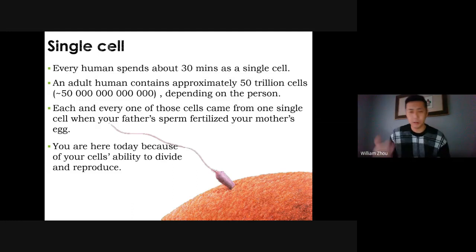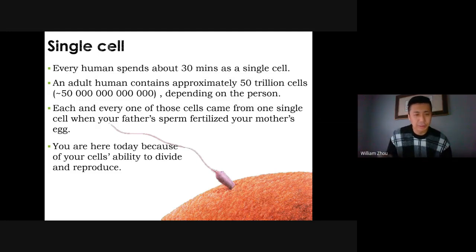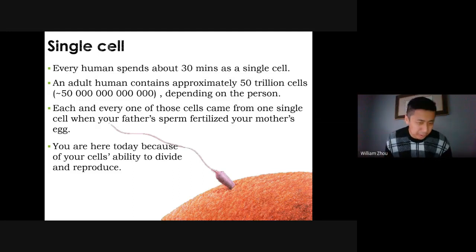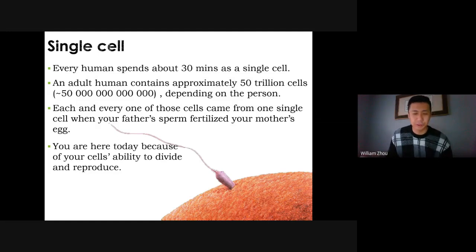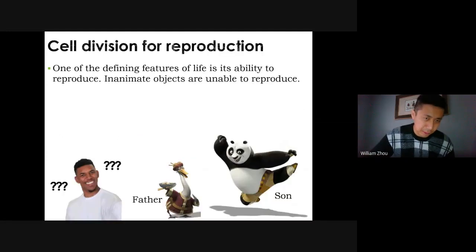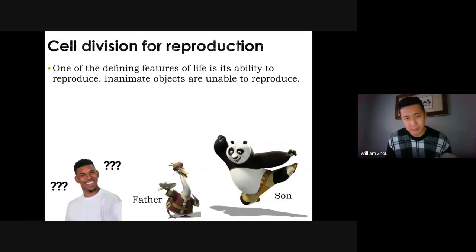We spent approximately 30 minutes as a single cell, and then it divided to make two cells, then four, then eight, and so on until we are who we are today. The first cell in your body was a fusion of a sperm and an egg from your parents. The cell's ability to divide and reproduce is extremely important — it is responsible for you being in class today.